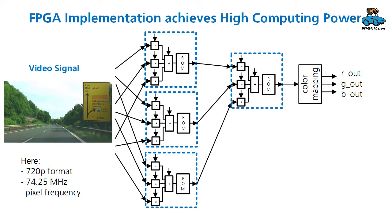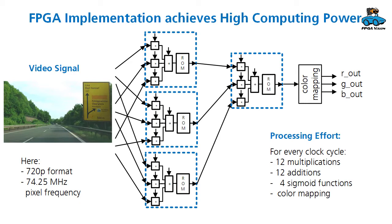The advantage of the hardware implementation is the ability to achieve high computing power. We need this because we have a video signal as an input. In our example we use 720p format with about 75 MHz pixel frequency. With 75 MHz you have a new input signal to process. We map algorithm and hardware structure. This means that all the computations are done in hardware in parallel.